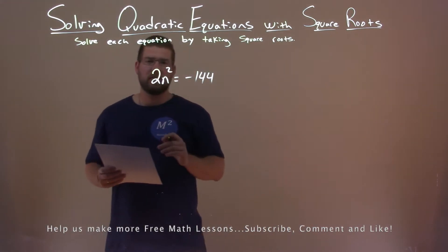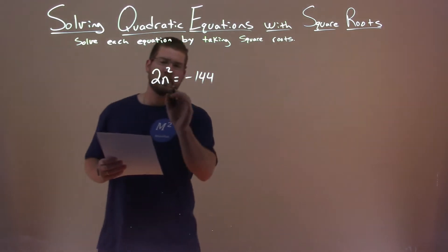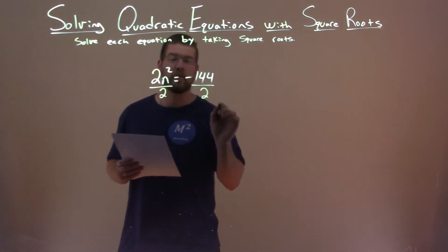Well, I say 2 times n squared and I want to get n by itself. So to do that, I have to divide by 2 to both sides.